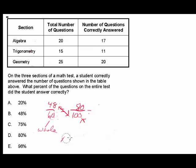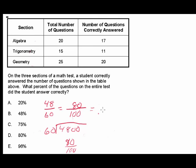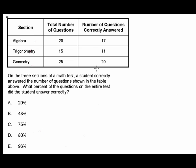When setting up a proportion for percentages, we always have 100 as the denominator on one side. Cross multiplication means taking the opposing numbers: 48 in the numerator multiplied by 100 gives us 4800, then divide by 60, which gives us 80 over 100 — the same as 0.80, which is 80 percent.